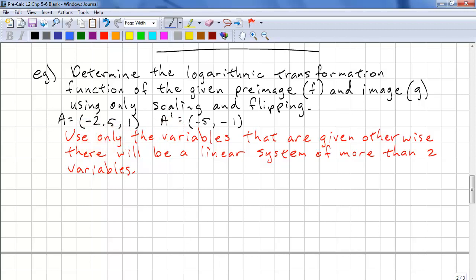You have to be careful here. Use only the variables that are given. Otherwise, there will be a linear system of more than two variables. And because we're told we're only using scaling and flipping, we should only be solving for c and d, not h and k. h and k in this case will be zero because it's not factored into the question.